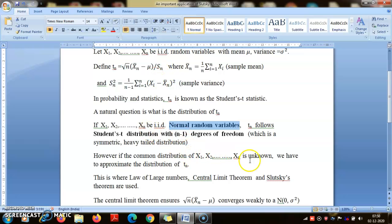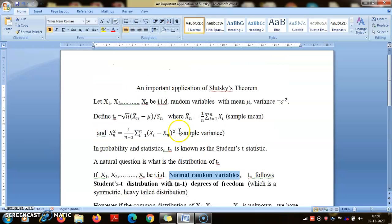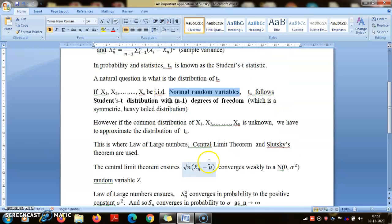We know that if these are normal, then it is Student's t. But what if this is not normal but only satisfies the finite variance condition? In that case, we are interested in knowing whether Tn converges weakly to some random variable. If that happens, then for large n we can at least use that distribution to approximate the probability distribution of Tn.